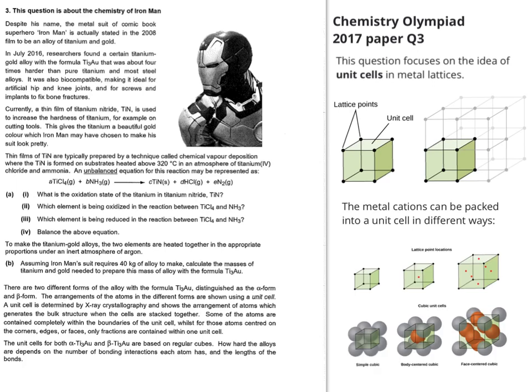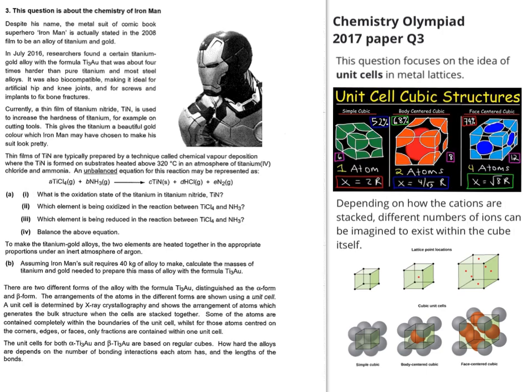The lattice points will have metal cations at their positions, and the metal cations can be packed into a unit cell in different ways. Depending on how the cations are stacked, different numbers of ions can be imagined to exist within the cube itself with different amounts of packing efficiency. You've got simple cubic, body-centred cubic, and face-centred cubic to give you simple examples.